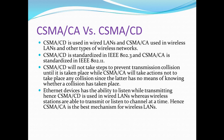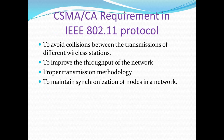Ethernet devices have the ability to listen while transmitting. In wireless, stations are only able to either transmit or listen to a channel at a time — not both simultaneously. Hence CSMA/CA is the best mechanism for wireless networks.